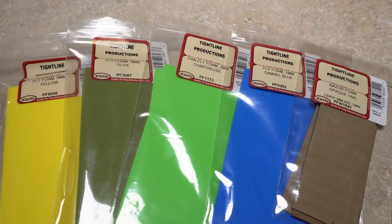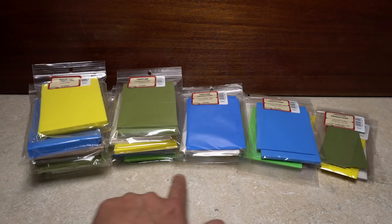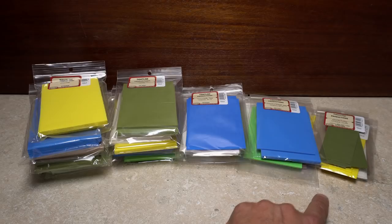Fly shop foam generally comes packaged as smaller, more manageable pieces. They typically carry a variety of thicknesses as well, such as six millimeter, three millimeter, two millimeter, one millimeter, and a super thin offering commonly called razor foam.